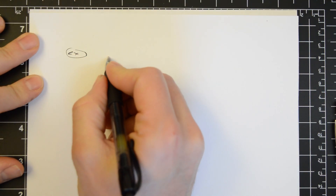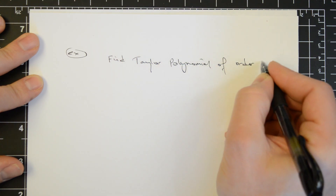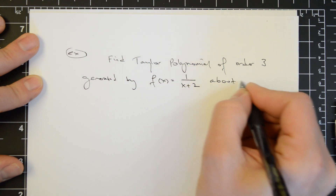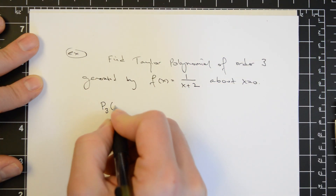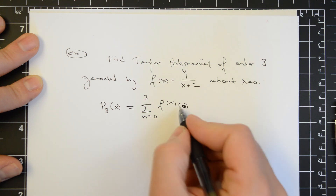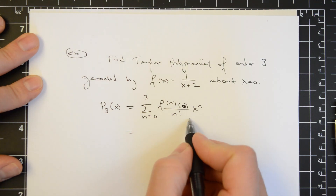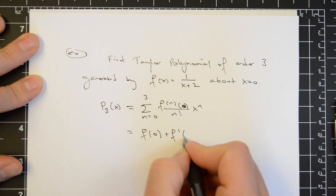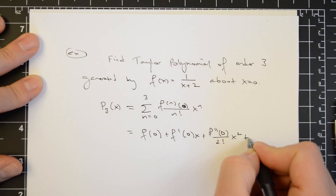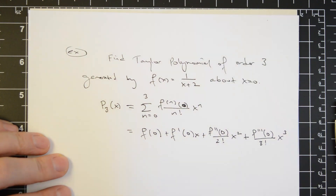In this example, we want to find a Taylor polynomial of order 3 generated by f of x equals 1 over x plus 2 about x equals 0. So here we want p3 of x, which is equal to the sum from n equals 0 to 3 of the nth derivative evaluated at 0 divided by n factorial times x to the n. Writing this out term for term, it will look like f of 0 plus f prime of 0 times x plus f double prime of 0 over 2 factorial times x squared plus the third derivative evaluated at 0 over 3 factorial times x cubed. This is called the third order Taylor polynomial.